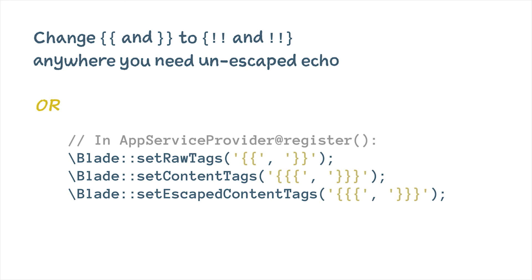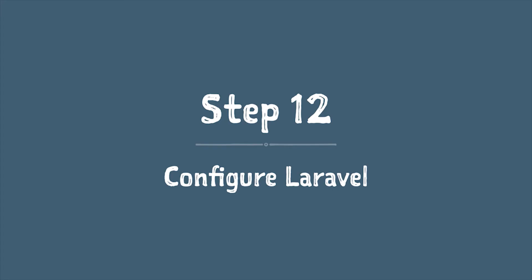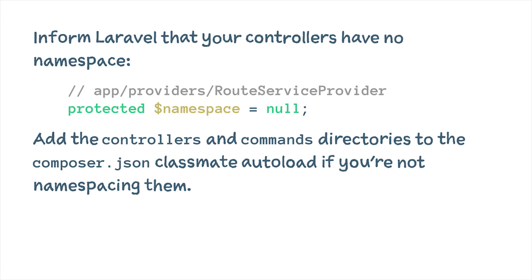Step eleven: upgrade your Blade echo syntax. The default double curly brace `{{ }}` still works, but it now escapes output. If you're expecting unescaped HTML, use the new `{!! !!}` syntax. If you have too many to change, you can reconfigure what tags Blade looks for, but using the new syntax is safer and easier. Step twelve: notify Laravel you're using controllers the old way by going into the route service provider and setting the controller namespace to null, rather than the default `App\Http\Controllers`. Additionally, classmap-autoload the controllers and commands directories in composer.json, just like the models directory, so they're brought in without relying on PSR-4.